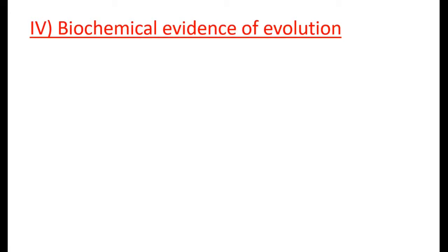Number four, biochemical evidence of evolution. In a previous video we talked about DNA, and we're going to see that there are many molecules and pathways which can be used to prove that there is a common ancestor to many species.